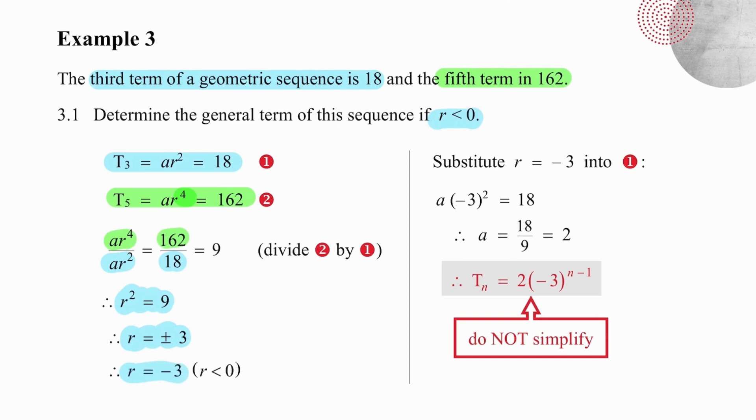We were asked to find the general term for this situation, so we take our r value and we substitute into something that we know, and we know that ar squared is equal to 18. Working that out gives us a equal to 2. We substitute into the formula, and again, this minus 3 is kept separate from the 2 because it has an exponent, and you must put those brackets in. They are essential.